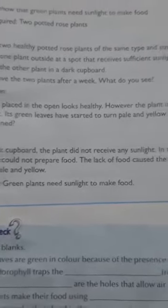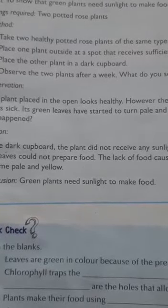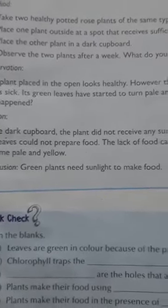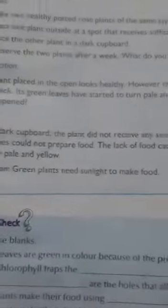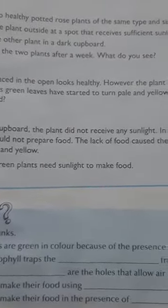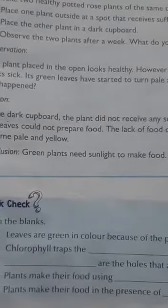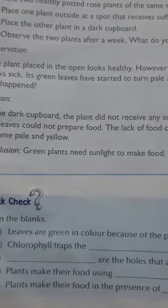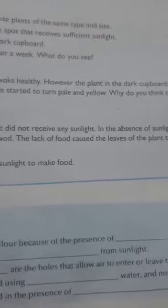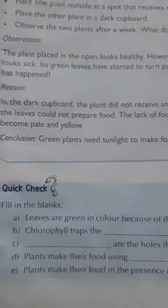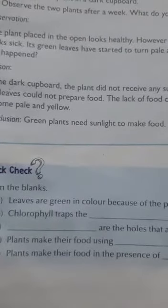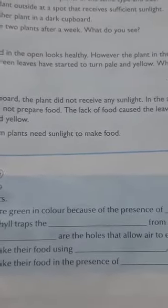Place one plant outside at a spot that receives sufficient sunlight, and place the other plant in a dark cupboard. After a week, you will notice that the plant in the open looks healthy, while the plant in the dark cupboard looks sick — its green leaves have started to turn pale yellow. This happened because the plant in the dark cupboard did not receive any sunlight.